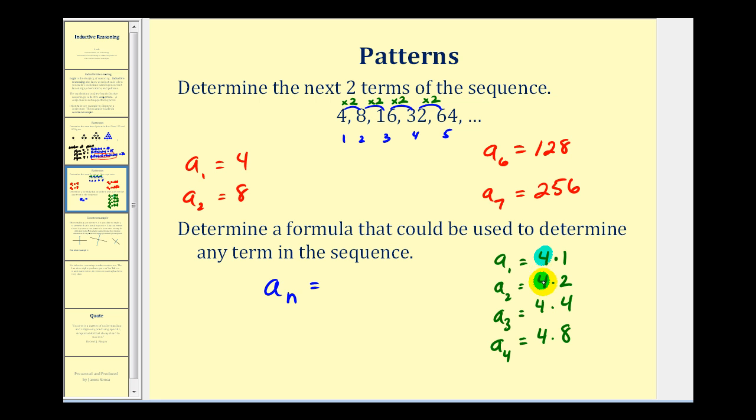So looking at this pattern, notice the four stays consistent. And the second factor, one, two, four, and eight, are actually powers of two. Two to the zero would be one, two to the first would be two, two to the second would be four, and two to the third would be eight.